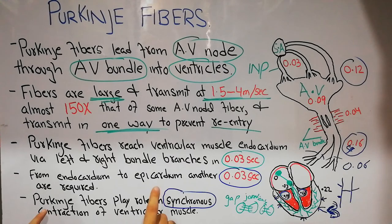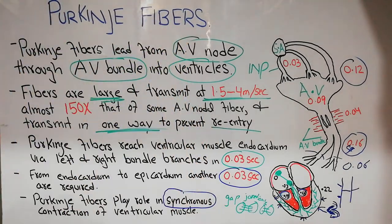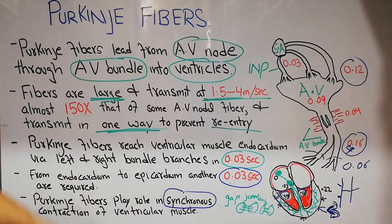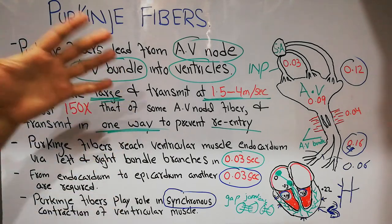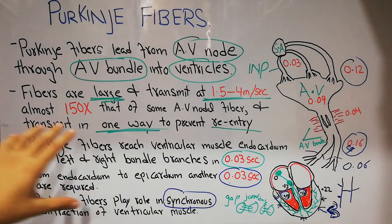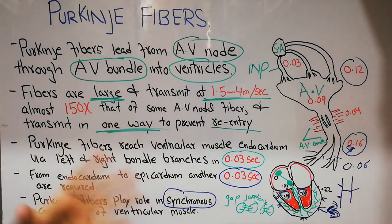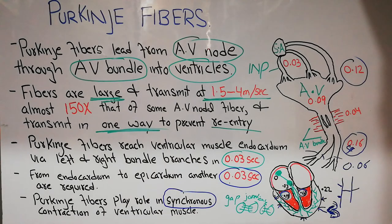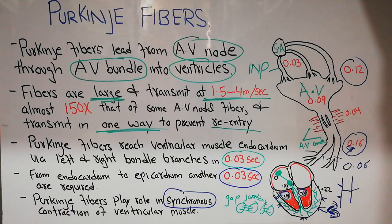These Purkinje fibers play a role in the synchronous contraction of the ventricular muscle. Due to their qualities, the contraction of the right and left ventricle is synchronous. That's all about the Purkinje fibers — how they take the impulse from the AV node to the ventricular muscle, how they ensure one-way transmission, how they prevent re-entry, and how they ensure synchronous contraction of the right and left ventricle. Thanks for watching.